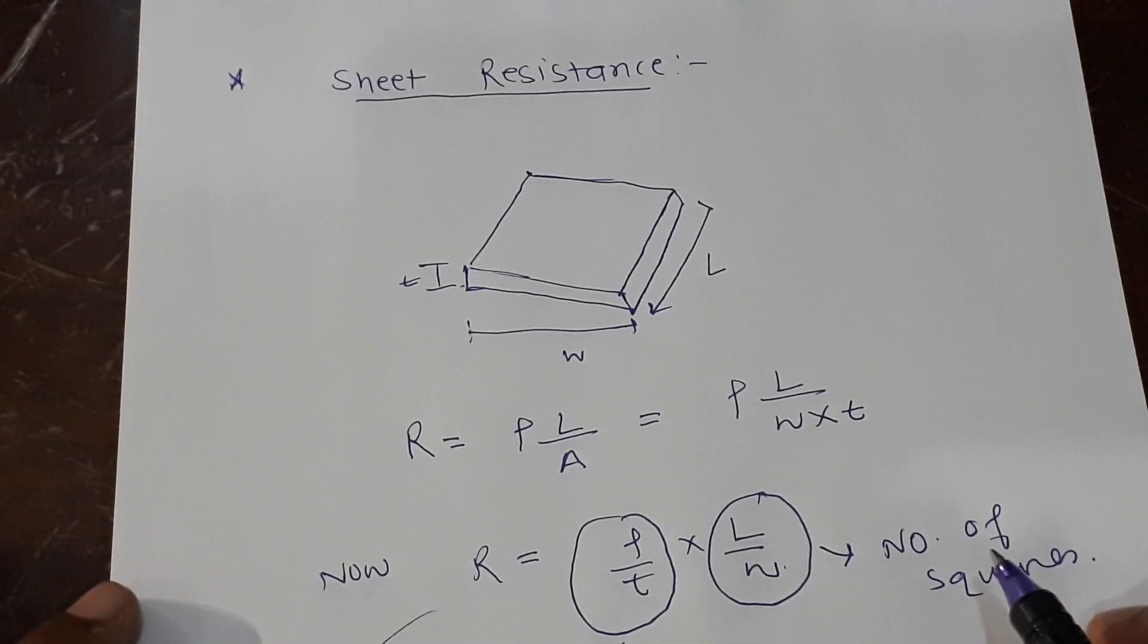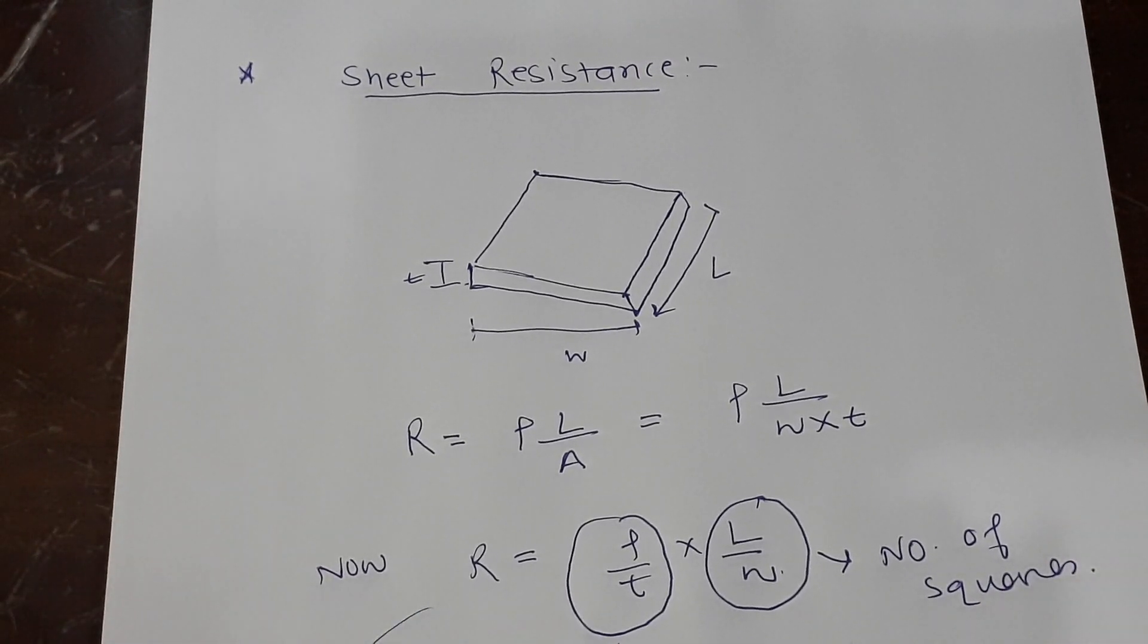Today we are going to talk about a very important quantity for us experimental physicists called sheet resistance. Sheet resistance has become very important nowadays because of two-dimensional materials—graphene and all kinds of exfoliating materials.